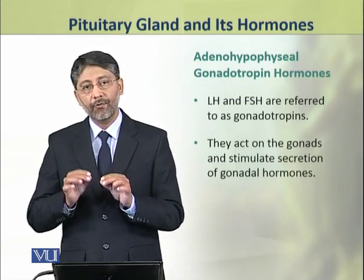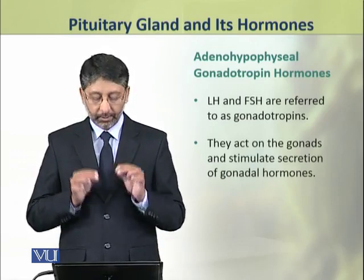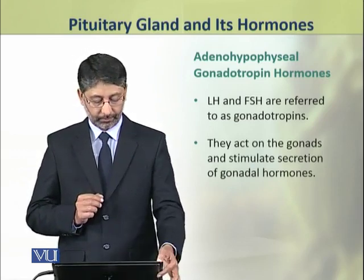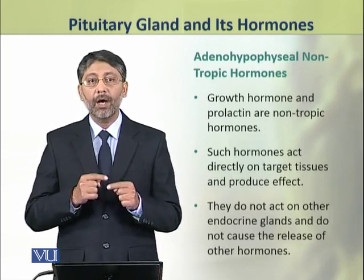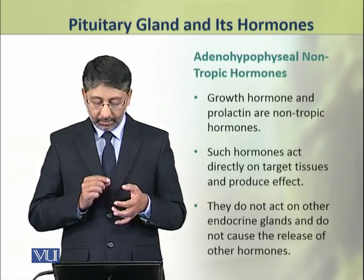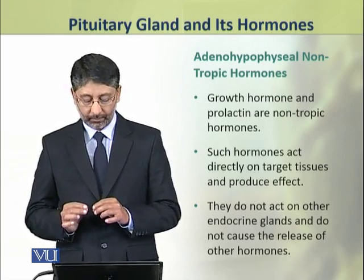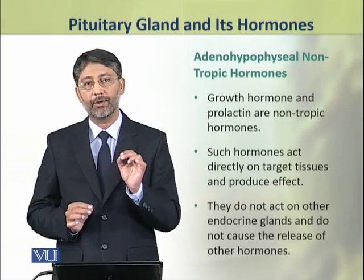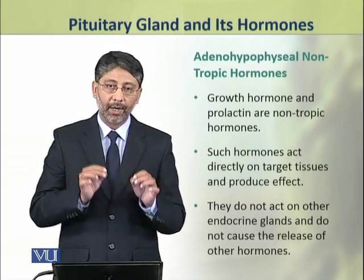The luteinizing hormone and follicle stimulating hormone are called gonadotropin hormones. They act on gonads and stimulate the secretion of gonadal hormones. The other 3 hormones of adenohypophysis — growth hormone and prolactin — are non-tropic hormones. Such hormones act directly on their target tissues and produce effects. They do not act on other endocrine glands.